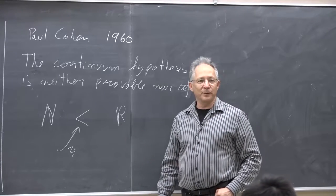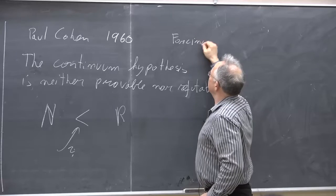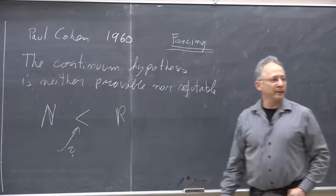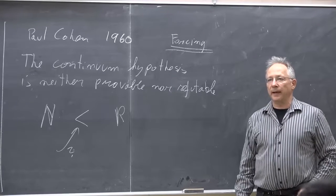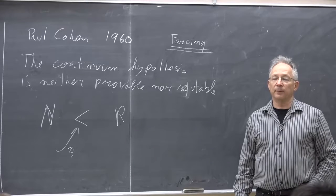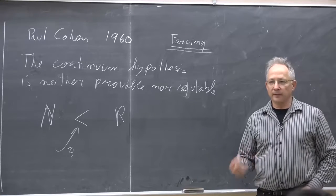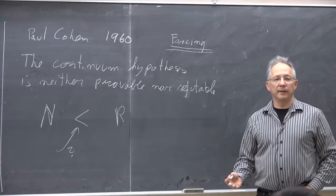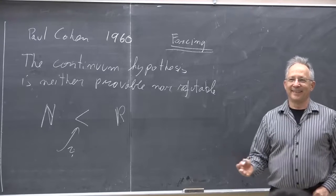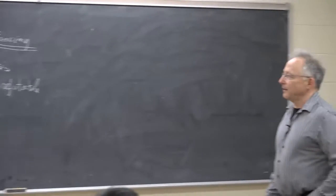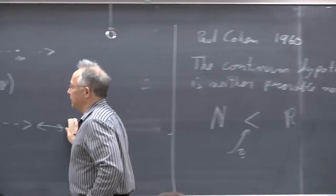He came up with the forcing technique — basically the only technique we have so far for showing that things are independent of a proof system. By now we can show many mathematical statements are independent. So modern mathematicians aware of Gödel's theorem, when facing an open problem, know there are three options: the answer will be yes, the answer will be no, or there is no answer. These are the consequences of Gödel's theorem.